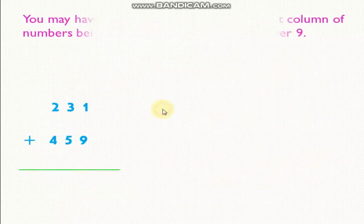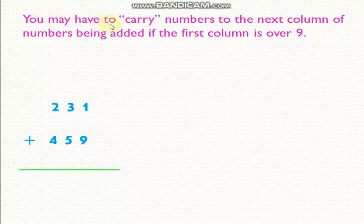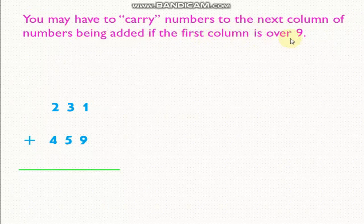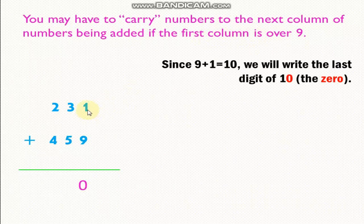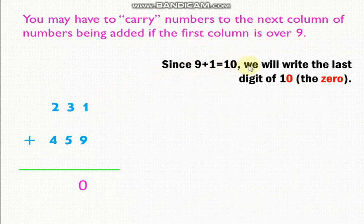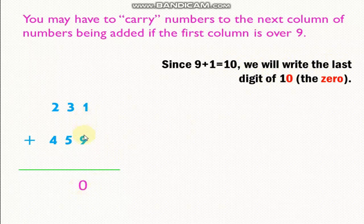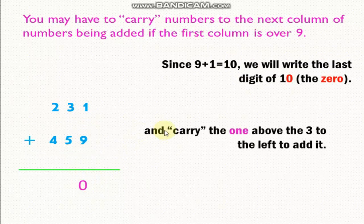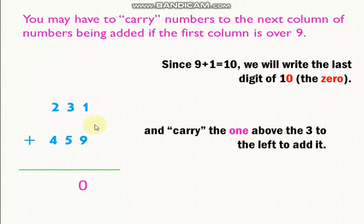You may have to carry numbers to the next column if numbers being added if the first column is over 9. Since 9 plus 1 equals 10, we will write the last digit of 10, the zero. 1 plus 9 equals 10. We will write 0 and turn it on above the 3 to the left to add it.